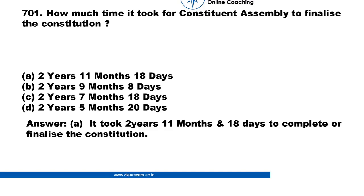How much time did it take for the Constituent Assembly to finalize the constitution? a. 2 years, 11 months, 18 days. b. 2 years, 9 months, 8 days.